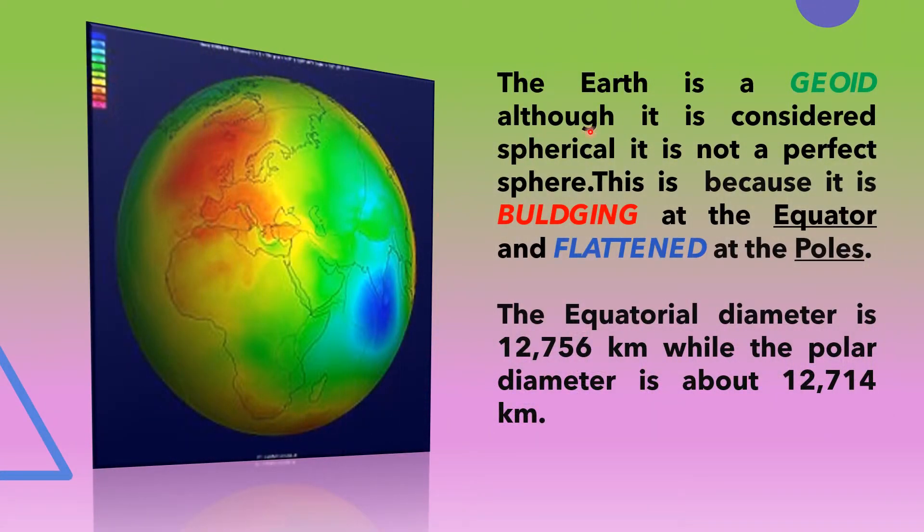Though the Earth looks like a sphere, it is not a perfect sphere. This is mainly because it is bulging at the equator and flattened at the poles.